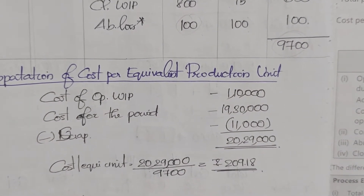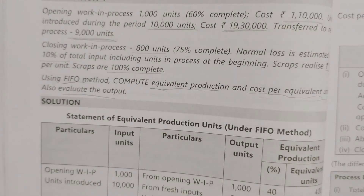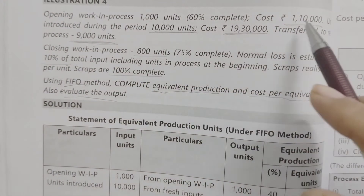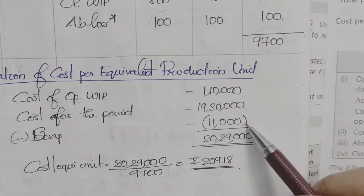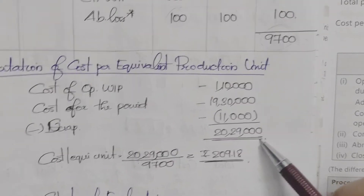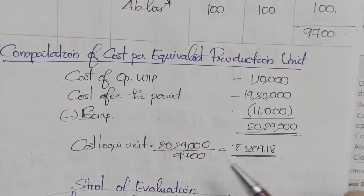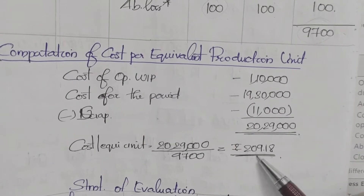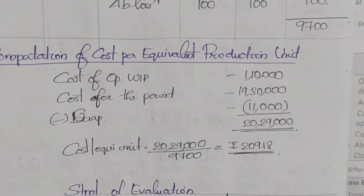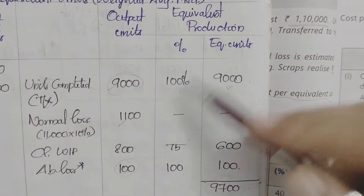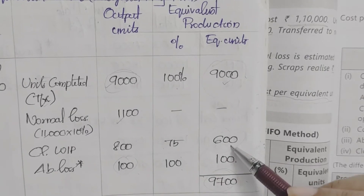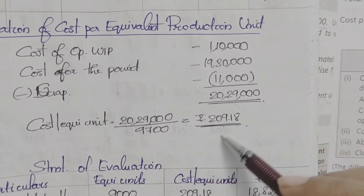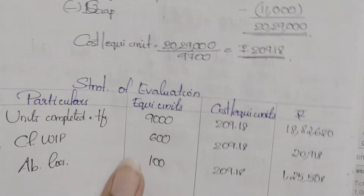For the weighted average method, total cost = opening cost 1,000,000 plus process cost 19,000,000 minus scrap value 11,000 = 20,000,000. Divide by equivalent units 9,700 to get cost per equivalent unit = 209.188. In the statement of evaluation, the 9,000 completed units, closing WIP 600, and abnormal loss 100 are valued at 209.188 per equivalent unit.